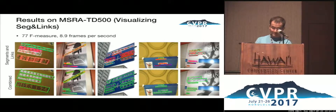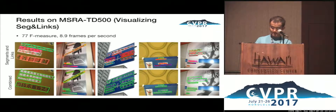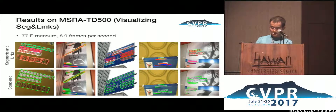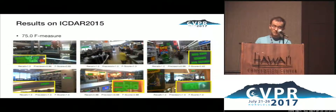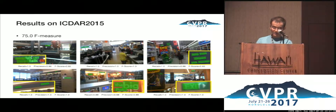These are some detection results on MSRITD 500. On the upper row, we visualize detected segments and links. The lower row contains combined boxes. These examples show that our method is able to detect text in extreme aspect ratios. Our method is also accurate and robust. These are examples on ICDAR 2015 dataset, where our method is able to detect text accurately in very cluttered scenes.